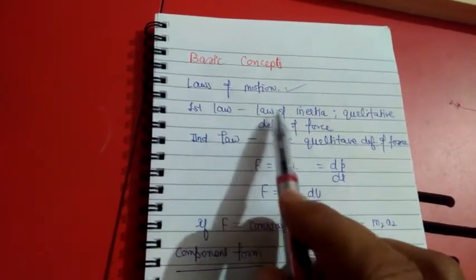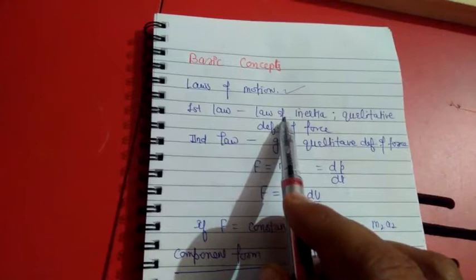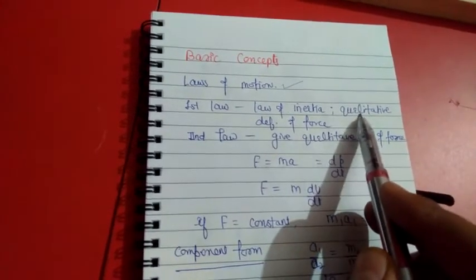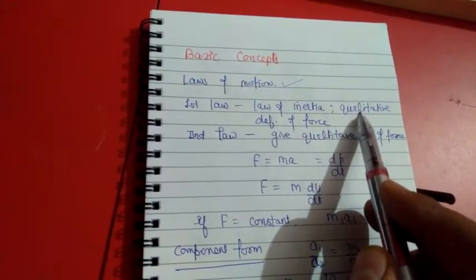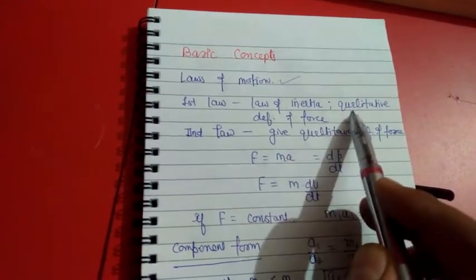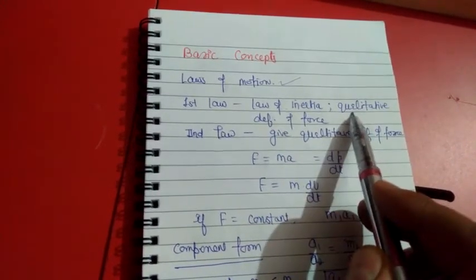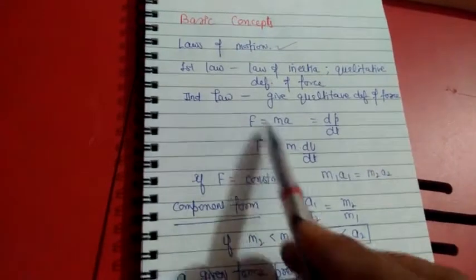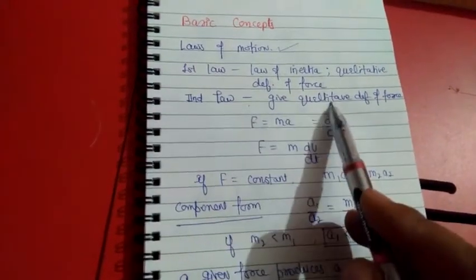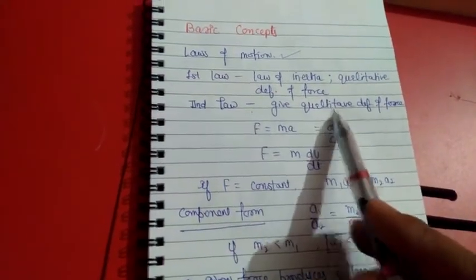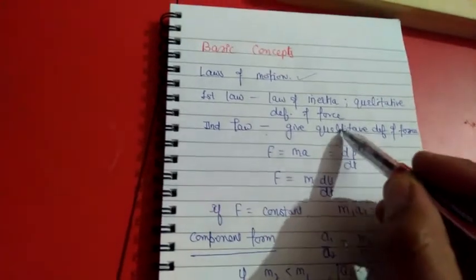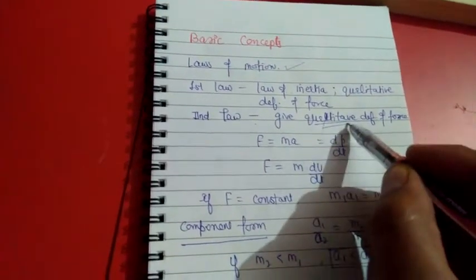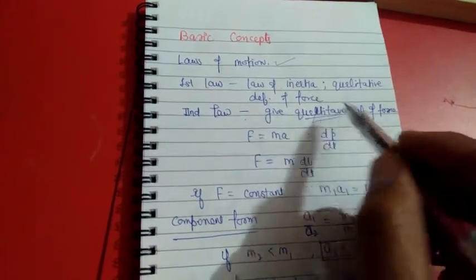From the first law, we get the definition of inertia. This law gives the qualitative definition of force — we get the qualitative nature of force from the first law. When we talk about the second law, it gives the quantitative definition, meaning what amount of force is acting on the body.